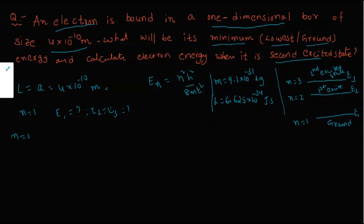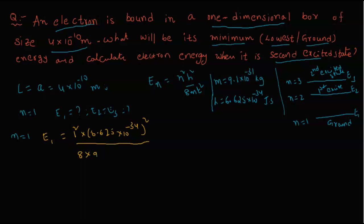Now we calculate E1, when n=1. Substituting: E1 = (1²) × (6.625×10⁻³⁴)² / (8 × 9.1×10⁻³¹ × (4×10⁻¹⁰)²). Using a calculator to simplify, we get E1 = 3.768×10⁻¹⁹ joules.